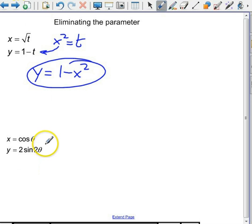t does not have to be the parameter. You can also have theta as a parameter. And so x is equal to cosine theta, and y is equal to 2 sine 2 theta.